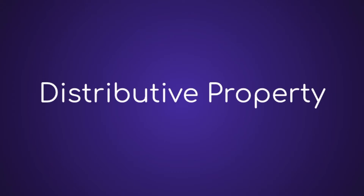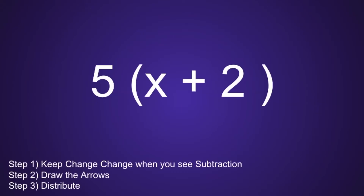The Distributive Property. There are three steps to simplify an expression using the distributive property. Step 1: keep change change when you see subtraction. Since we do not have subtraction in this problem, we are going to move on to step number 2, which is to draw the arrows. We draw arrows so we don't forget to multiply that outside number to the second term in the parentheses.